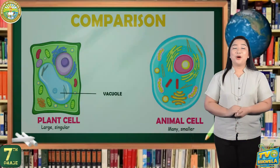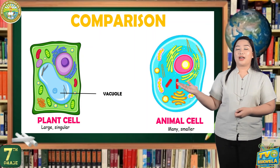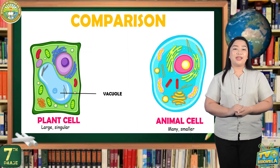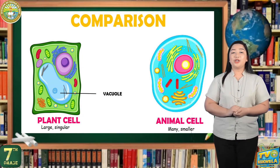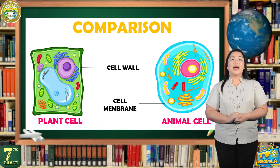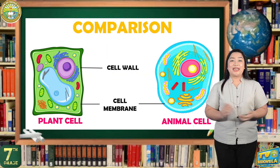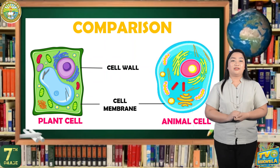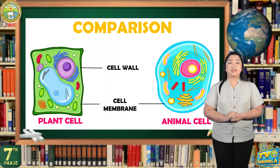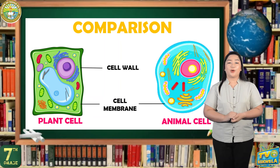Because animals get sugar from the food they eat, they do not need chloroplasts — just mitochondria. Both plant and animal cells have vacuoles. A plant cell contains a large singular vacuole that is used for storage and maintaining the shape of the cell. In contrast, animal cells have many smaller vacuoles. Both plant and animal cells have a cell membrane, but only plant cells have a cell wall. In plant cells, the cell wall surrounds the cell membrane. This gives the plant cell its box-like shape and allows plants to remain strong and stand upright even if they grow to great heights.